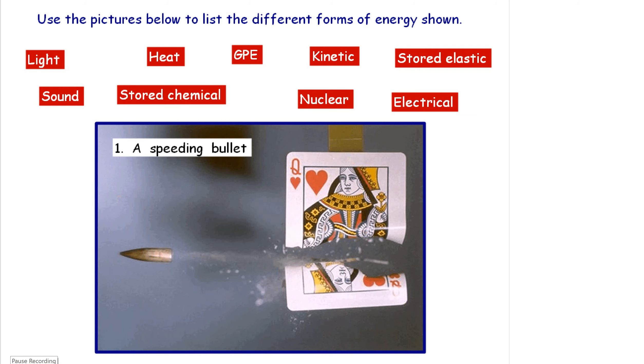Welcome Year 7, this is lesson two in our energy booklet. Use the pictures below to list the different forms of energy shown. We can see a speeding bullet. Now a speeding bullet will have GPE, gravitational potential energy, because it is above the ground and it also has a tremendous amount of kinetic energy as well.